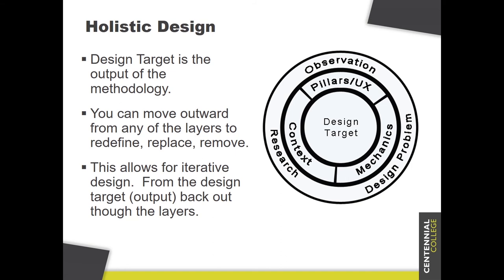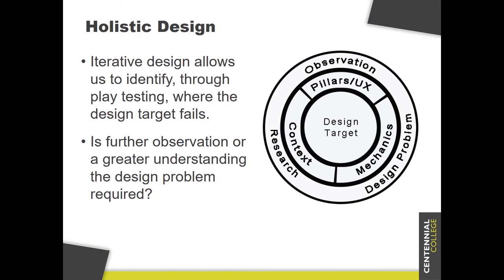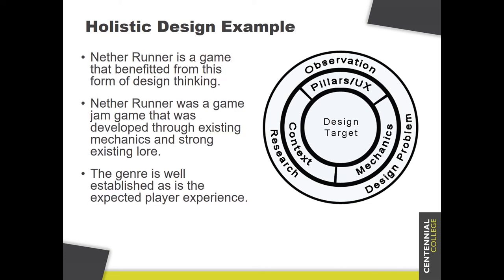The design target is the output of the methodology — the solution to our design problem. That's where we ultimately move from the general into the specific. In my own work I found I was constantly moving back and forth through iterative design. Even when I thought I'd reached my design target, testing showed it wasn't quite right. I'd go back and maybe change some context — if people didn't react well to the story, I'd tweak it. It's all about refinement until you have a design target that solves your design problem. It's not about moving in one direction; it's about moving in whatever direction you need to get the job done.